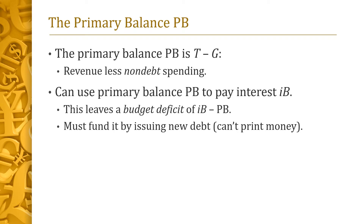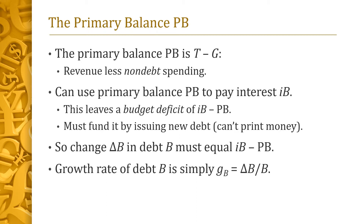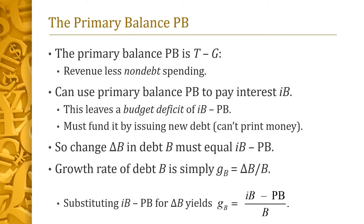Thus, the change in debt, denoted delta-B, equals the budget deficit — which is just the required interest payment IB minus the primary balance PB. The growth rate of debt, denoted G_B, is simply the change in debt delta-B divided by debt B. This is the percentage increase in debt caused by issuing new debt to fund the budget deficit. Substituting IB minus PB for delta-B, we obtain our final formula for the growth rate G_B of debt: it is simply the budget deficit IB minus PB, divided by the stock of debt B.